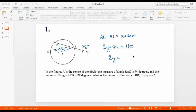So 2Y is equal to 106. So Y is 53. So each of these angles is 53 degrees.